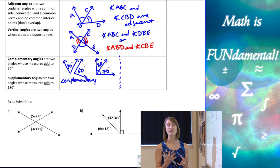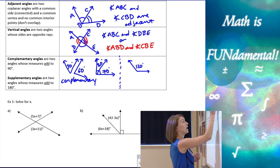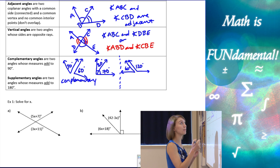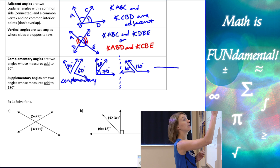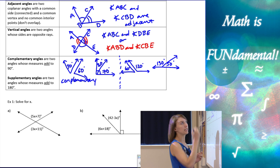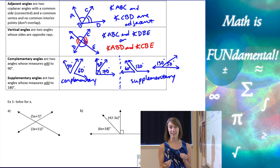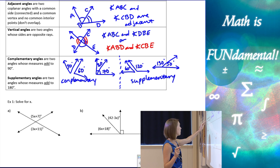Supplementary angles are when the angles add to 180 degrees. I could have an obtuse angle of 120 degrees and a 60-degree angle — those put together are going to be supplementary. We might also see them adjacent, like 130 and 50 degrees. So two angles that add together to be 180 degrees are supplementary. If they add to 90 degrees, they're complementary. You'll just need to practice those.